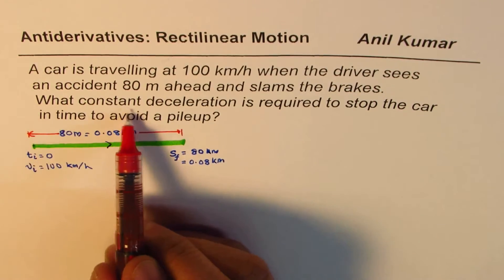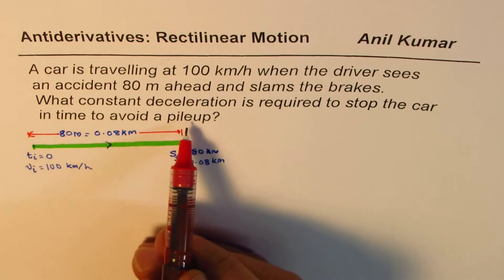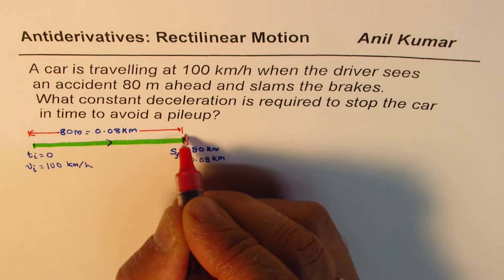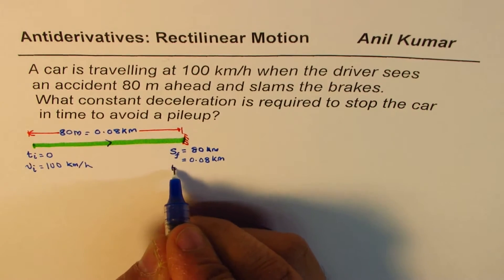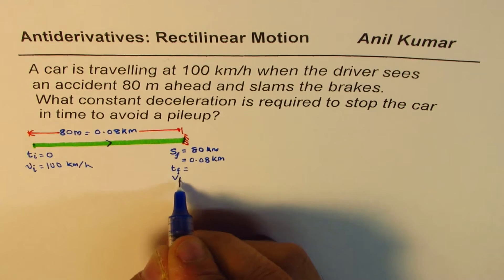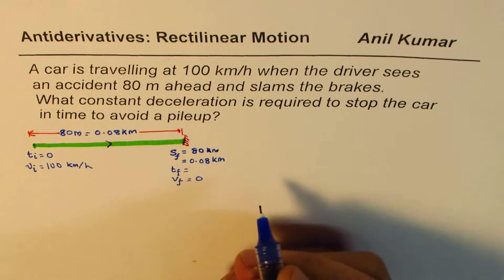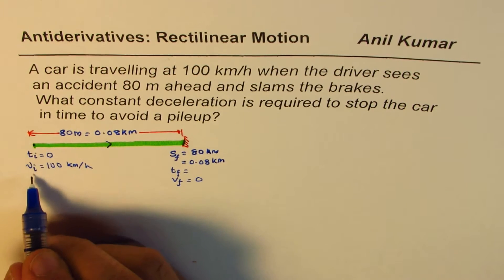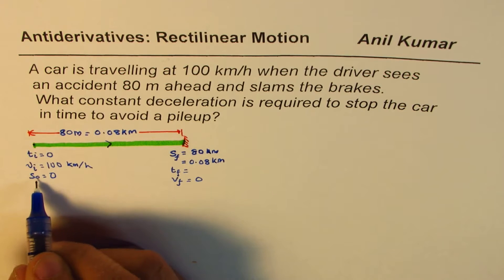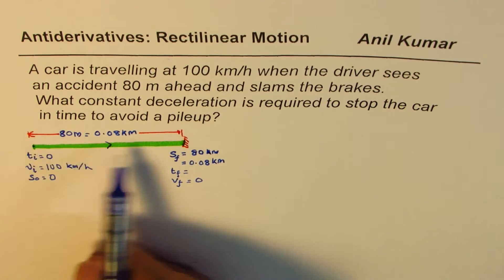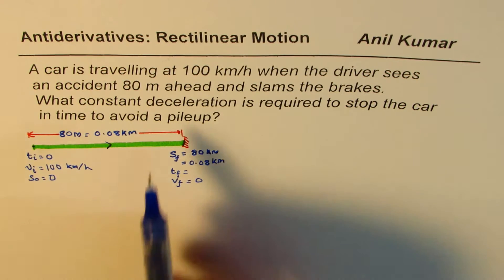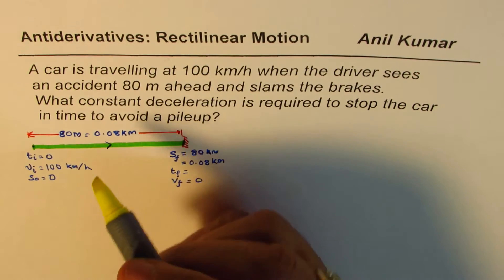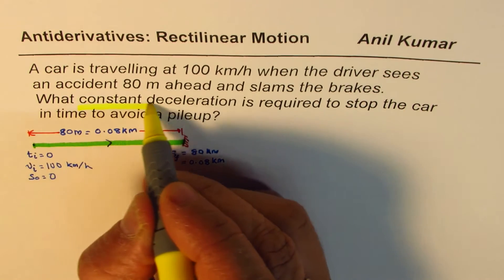What constant deceleration is required to stop the car in time to avoid a pile up? Here is where the accident is, so we have to stop before this distance. We know the final velocity will be 0, and the displacement is 0 from the starting point. We need to find the acceleration so that the velocity reduces from 100 to 0 — that's deceleration.